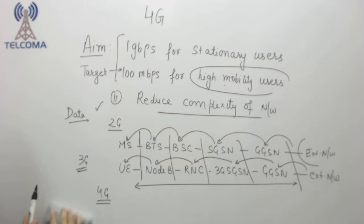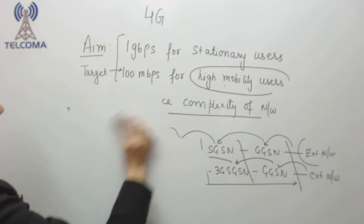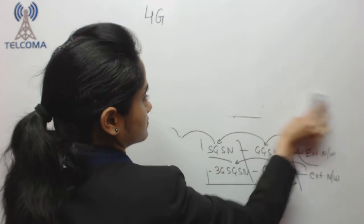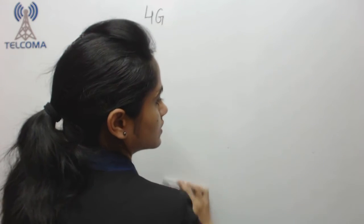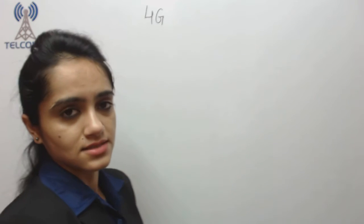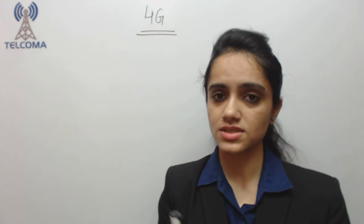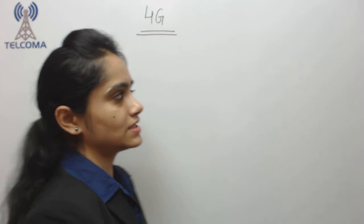So after 3G, 3GP has many releases and last we have 4G, and 4G has provided us 1 gigabit per second for stationary users and 100 mbps. Now let's talk about its architecture description.